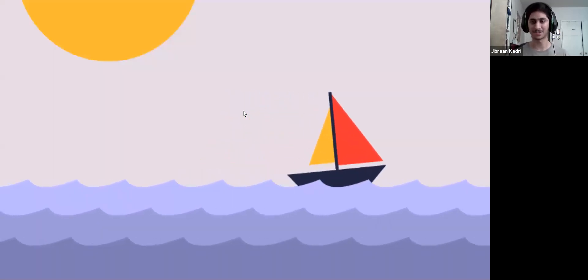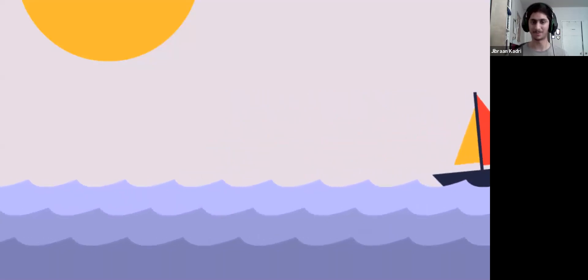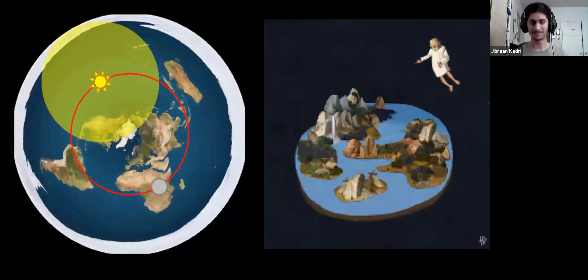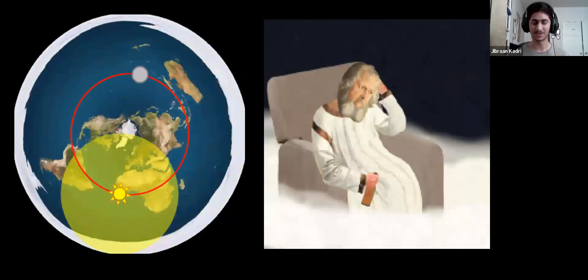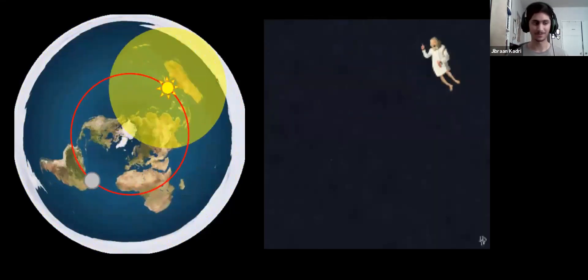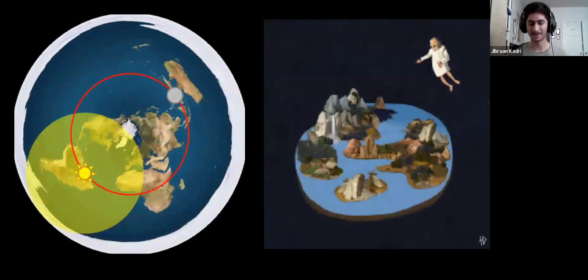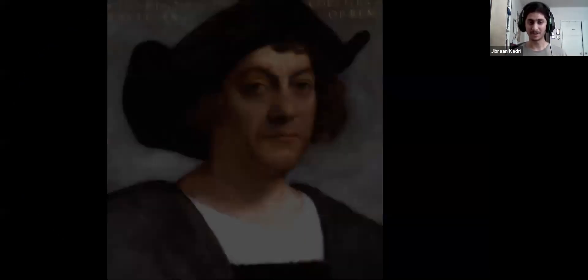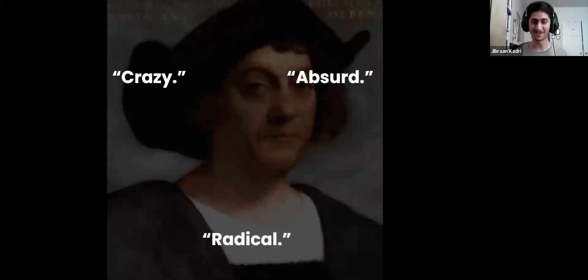This is Christopher Columbus, and as the story goes, we know that he set sail across the world to prove that the Earth wasn't flat. And at that time, people thought that the Earth was actually flat. People genuinely thought that the Earth was flat. And so, people called him things like crazy, absurd, radical, but the best part was that he was right.